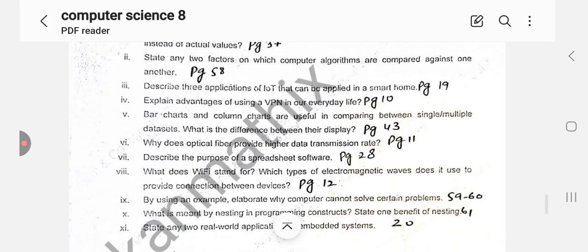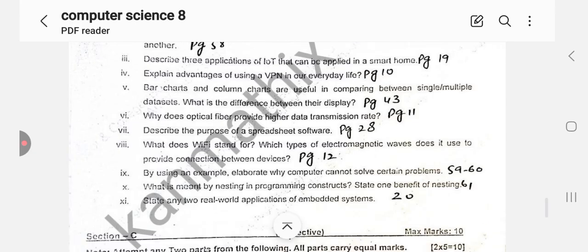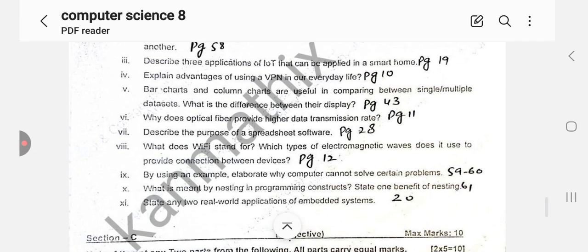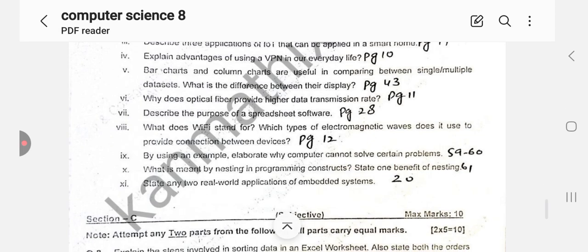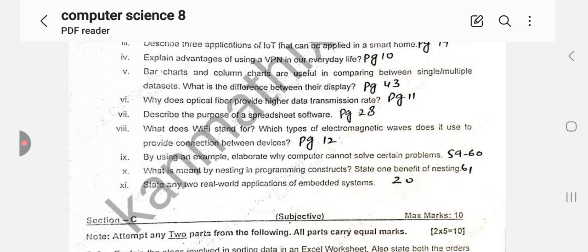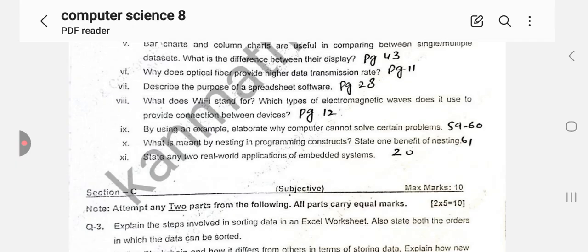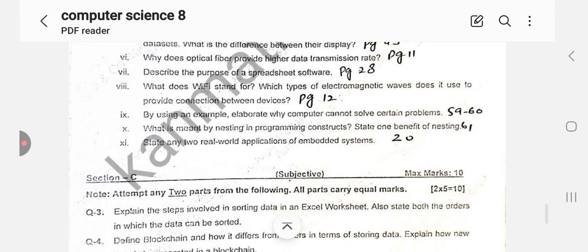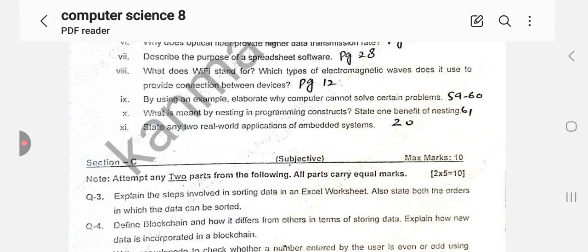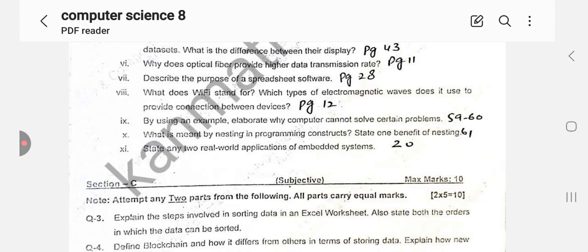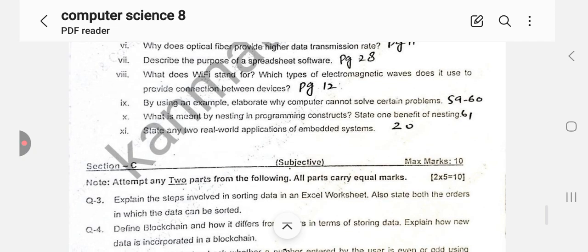First question, refer to page 37. Second, state any two factors on which computer algorithms are compared against one another, page 58. Describe three applications of IoT that can be applied in a smartphone, refer to textbook page 19. Explain advantages of using a VPN in our everyday life, page number 10. Bar charts and column charts are useful in comparing between single and multiple data sets. What is the difference between the display? Refer to textbook page 43. What is optical fiber? Provides higher data transmission rate, page 11. Describe the purpose of spreadsheet software, page 28. What does Wi-Fi stand for? Which types of electromagnetic waves does it use to provide connection between devices? Refer to textbook page 12.